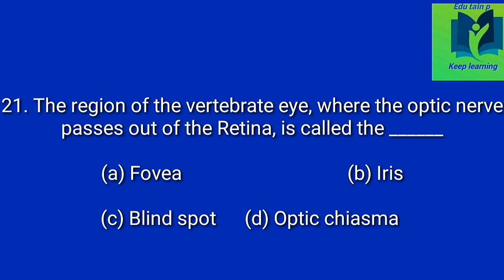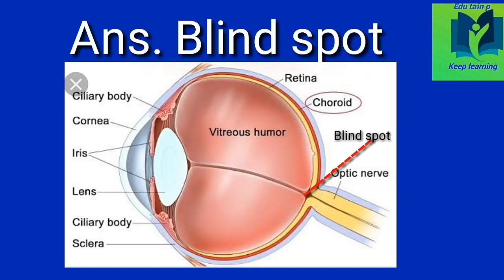The region of the vertebrate eye where the optic nerve passes out of the retina is called the dash. Option A: phobia. Option B: iris. Option C: blind spot. Option D: optic chiasma. Answer: blind spot.